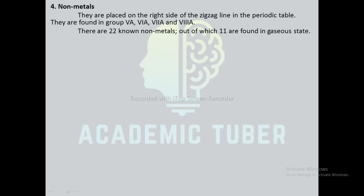Non-metals: they are placed on the right side of the zigzag line in the periodic table and are found in groups 5A, 6A, 7A, and 8A. There are 22 non-metals, out of which 11 are found in the gaseous state.